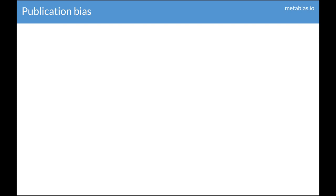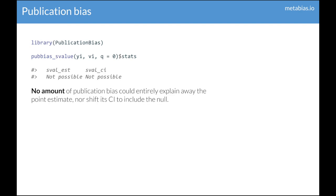Let's look at this sensitivity analysis in action. In the publication bias R package, you can use the function pubbias_s_value to find the selection ratio that would need to be present to attenuate the estimate to the null. All you need to pass to it are the y values — the estimates from your meta-analysis — and the v values — the variances from your meta-analysis. In this case, passing the data from the video game and aggression study, there's actually no amount of publication bias that could entirely explain away the point estimate, nor shift the confidence interval to include the null.